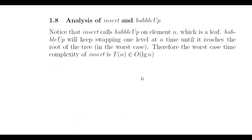Analyzing insertion and bubble up: the assignment operations — incrementing n and assigning a[n] — are done in constant time. The bubble up method is the part that takes more time. It's a recursive process starting from a leaf and bubbling up all the way to the root in the worst case. Since the height of the tree is log n, the total number of operations required for bubble up is O(log n) in the worst case.